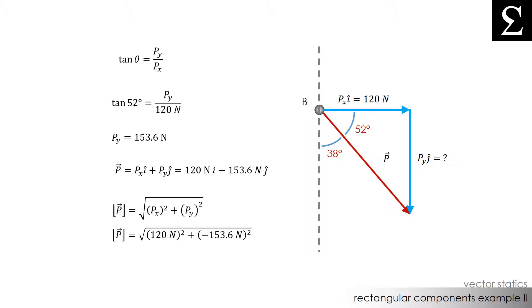If we plug in 120 N for Px and 153.6 N for Py, and remember these are magnitudes of Px and Py, we find that the magnitude of force P that is pulling on the pole is equal to 194.9 newtons.